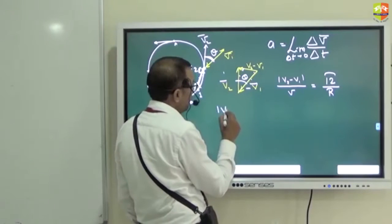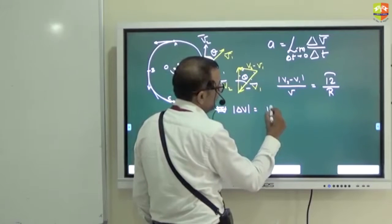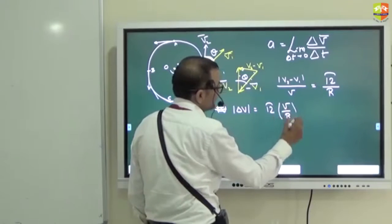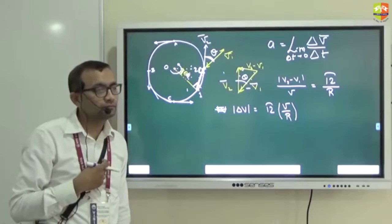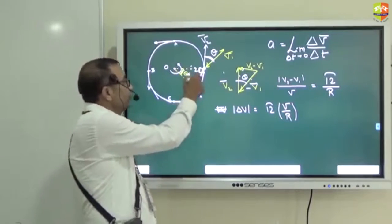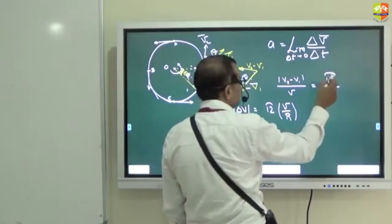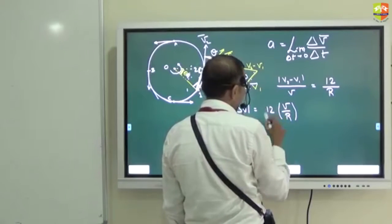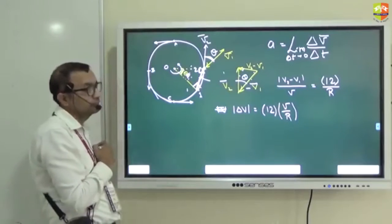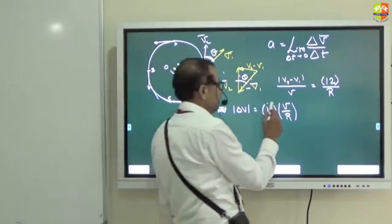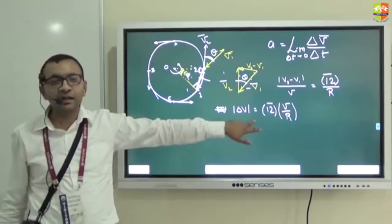So the magnitude of v2 minus v1, which is the magnitude of delta v, will be equal to the distance from 1 to 2 times V divided by R. It is the chord distance from 1 to 2, not the arc length — sorry about that — distance 1 to 2.